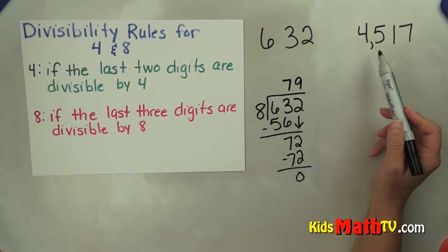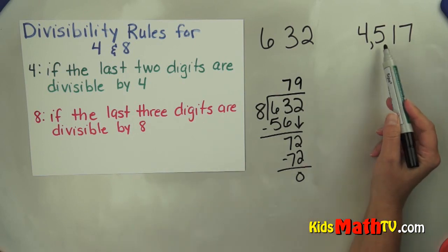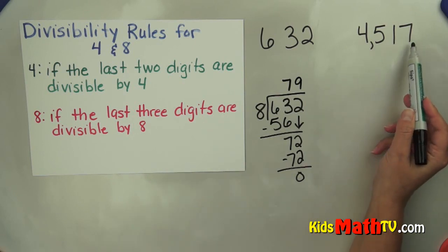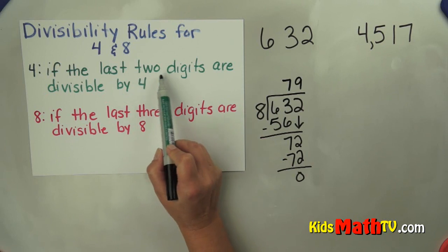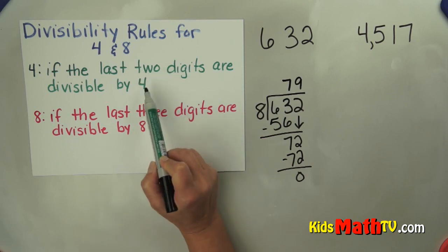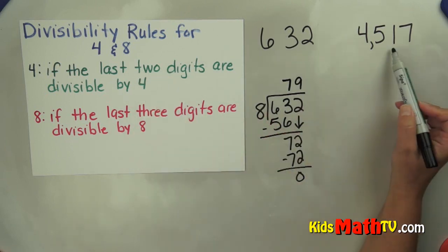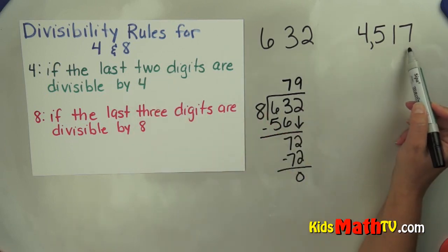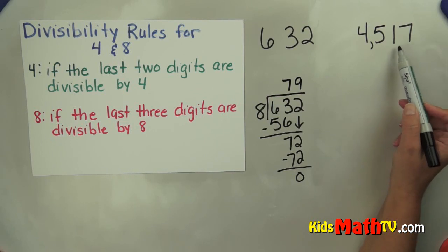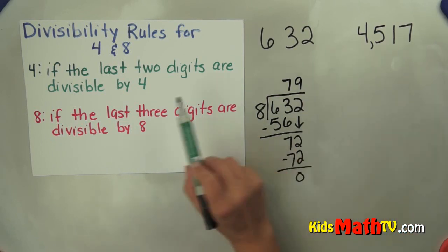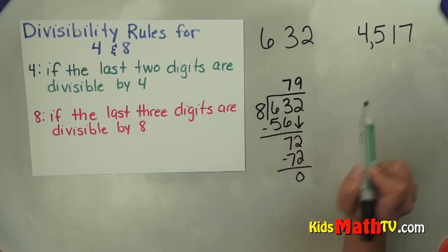Let's check the number 4517. We check the last 2 digits to see if it's divisible by 4. Does 17 divide by 4 evenly? No — 4 times 4 is 16, but I can't get to 17. So 4517 is not divisible by 4.